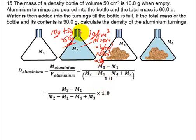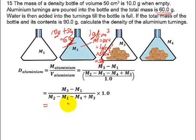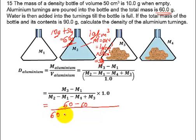This value of 60 grams appears to be equal to the mass of aluminium and the density bottle. According to the question, aluminium turnings are poured into the bottle and the total mass is 60 grams. So M2 is equal to M3. However, let's substitute those values as they are. M3 — the mass of aluminium turnings and the density bottle — is 60 grams. So the density of aluminium is 60 minus M1 (which is 10), all divided by M2 (60) minus M1 (10) minus M4 (which is the total mass of aluminium, water, and the density bottle, which is 90), plus M3 (which is 60).